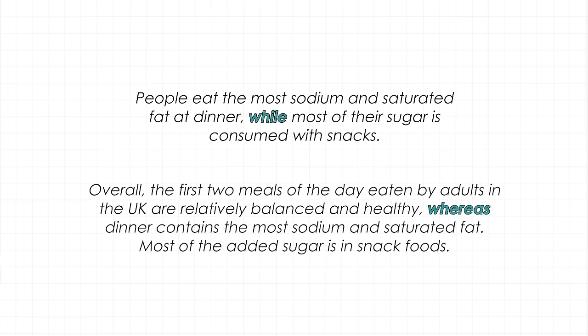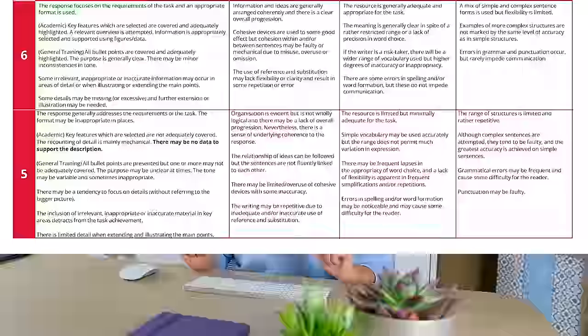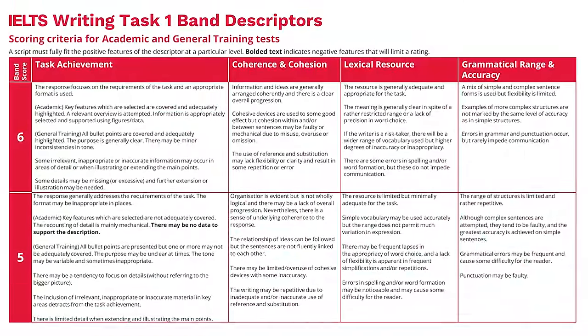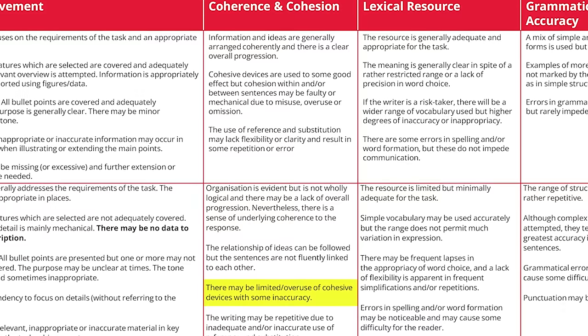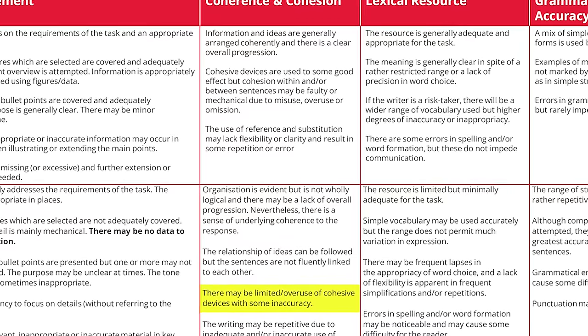In the previous example we used 'while' and 'whereas' in the middle of the sentence. Here's what's tricky about linking words: naturally, we tend not to use enough connectors, and as an English learner you may not know enough to pick the perfect one for each situation. But some test takers learn them and then overuse them. Both will be punished. The IELTS band descriptors are clear — Band 5 in coherence and cohesion states: 'There may be limited or overuse of cohesive devices with some inaccuracy.' So you need to use not too many, not too few, and use them accurately.